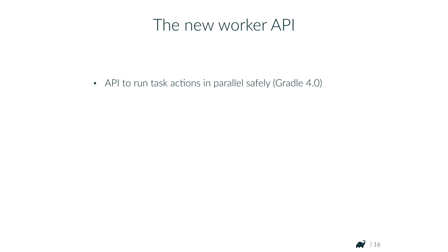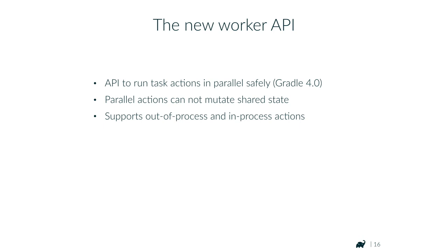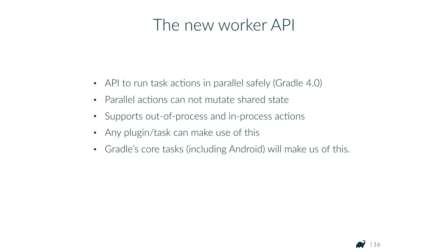With the next release of Gradle — Gradle 4.0 after 3.5 — we will provide an API to run task actions in parallel safely. Parallel actions will not be able to mutate any shared state. The API supports out-of-process and in-process actions, and Gradle will manage all the daemon processes for you for out-of-process actions. Any plugin task can make use of this, and Gradle core tasks including the Android tasks will make use of it as soon as it's available.